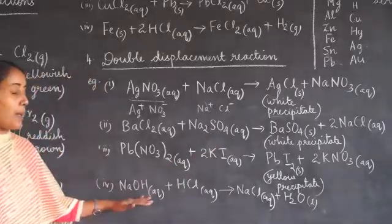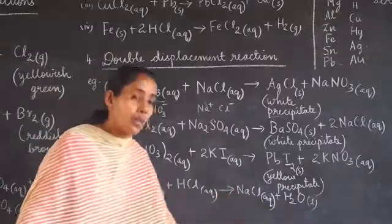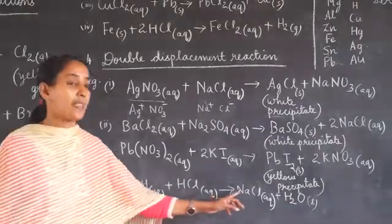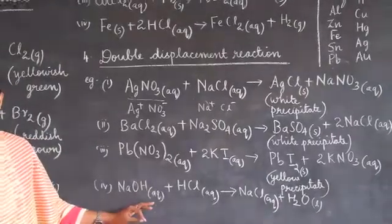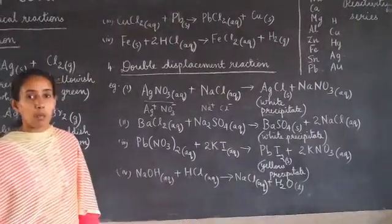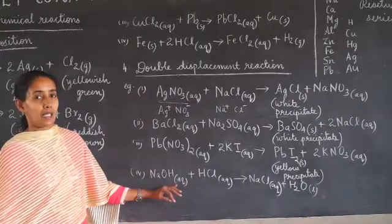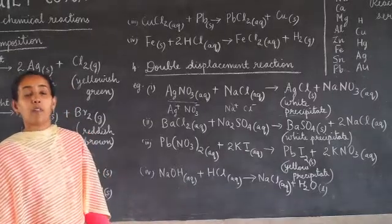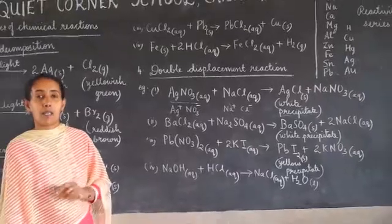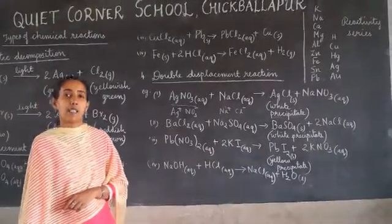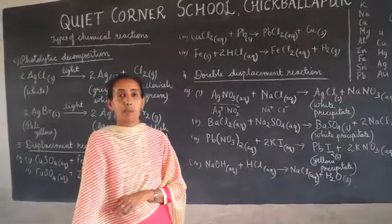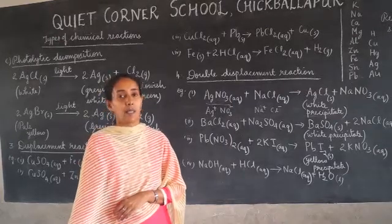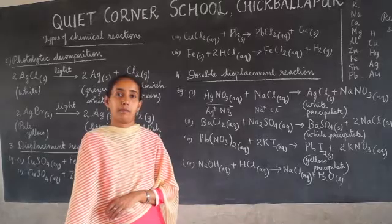Another example is sodium hydroxide plus hydrochloric acid giving sodium chloride plus water — this is called a neutralization reaction. A neutralization reaction is the reaction between an acid and a base to form salt and water. This is also a type of double displacement reaction as there is an exchange of ions. So there are mainly four types of chemical reactions: first, combination reaction; second, decomposition reaction; third, displacement reaction; and fourth, double displacement reaction. Double displacement reaction is also known as precipitation reaction.